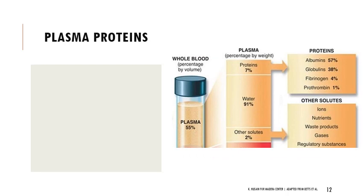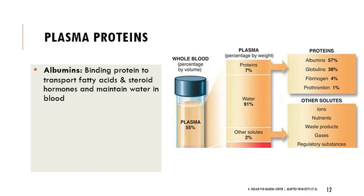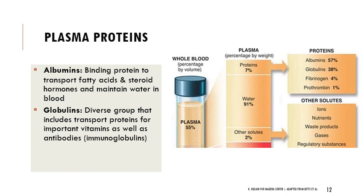There are a few plasma proteins that are especially important. Globulins will be very important when we talk about the immune system in the next lecture, and fibrinogen is important for clotting today. Albumin is a binding protein important for transporting fatty acids and steroid hormones — hydrophobic substances that are hard to transport in blood — and it also helps maintain water in the blood. Globulins include antibodies; immunoglobulins specifically refer to antibodies. Fibrinogen is involved in the clotting mechanism, hemostasis, which we'll discuss shortly.